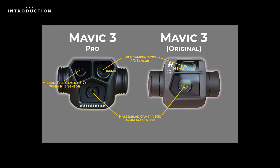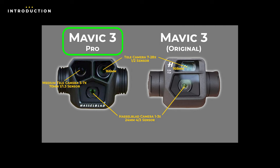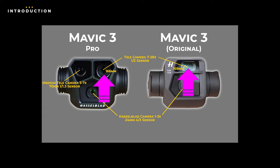The biggest difference between the original and Pro versions is the number of cameras. The original has two, and the Pro has three. Both have the Hasselblad camera on a four-thirds sensor and a telephoto camera on a half-inch sensor. The Pro version has an additional medium telephoto camera, which fills in the gap between the two.